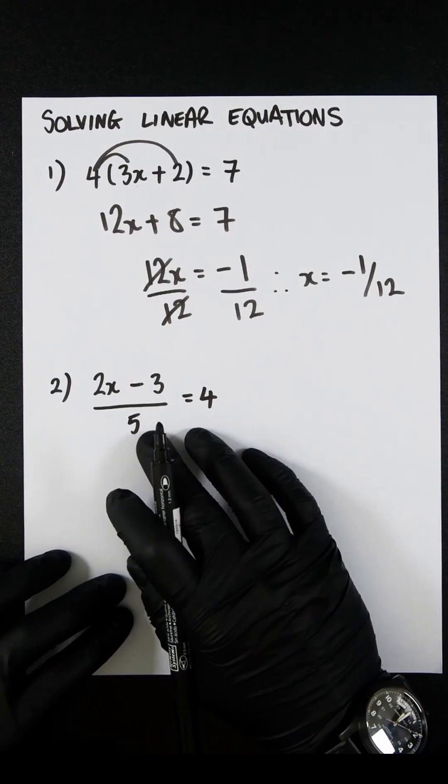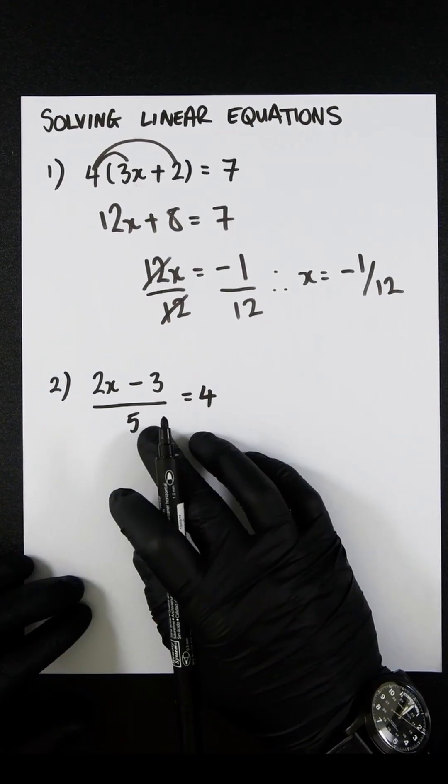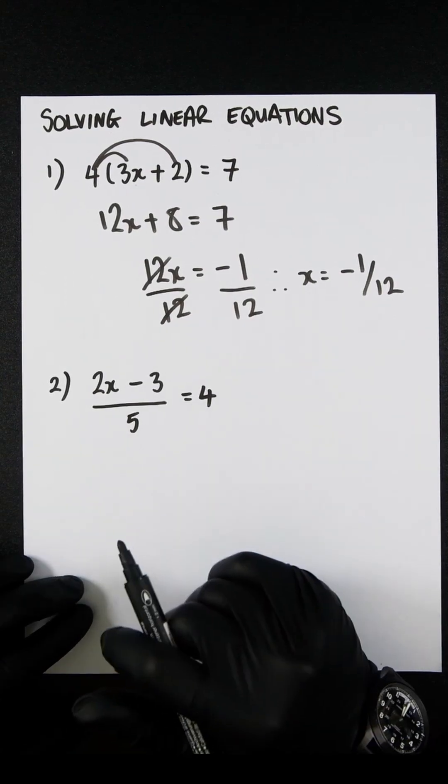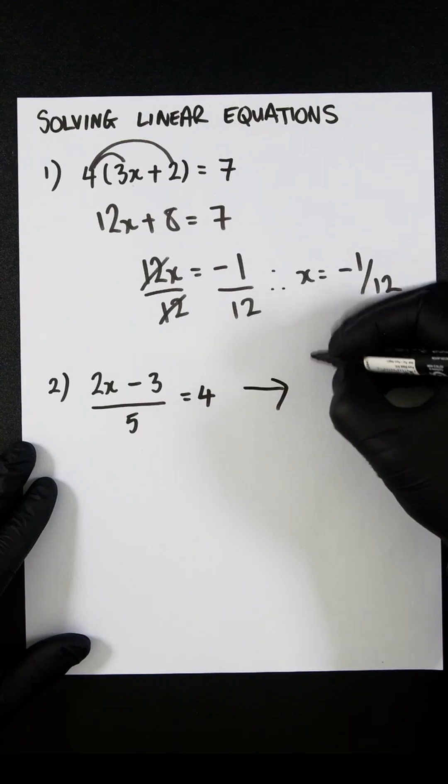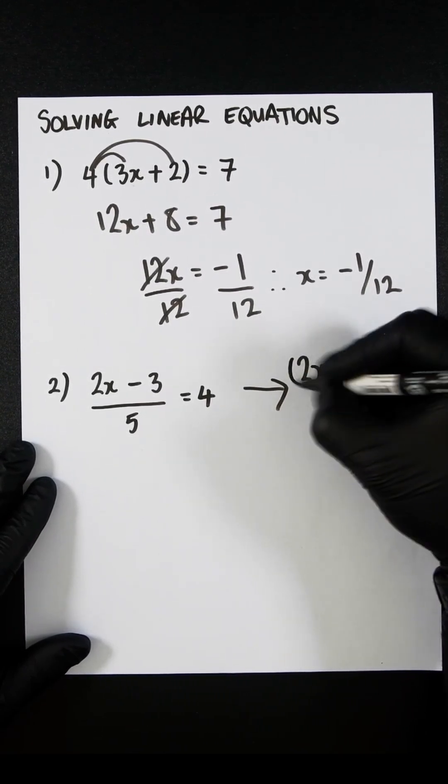On this question, we have a 5 in the denominator. What you do to the left-hand side must be done to the right-hand side. So let's multiply everything by 5.